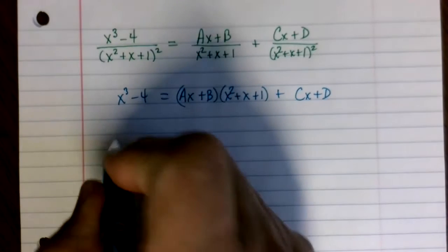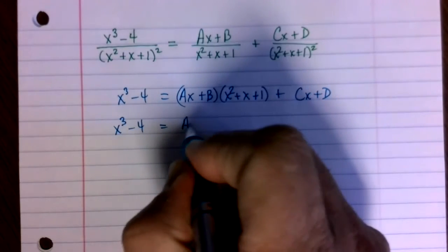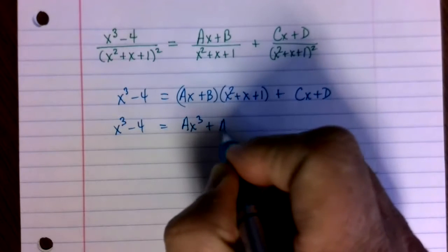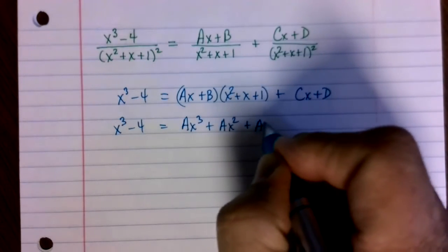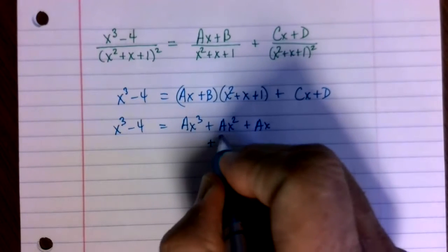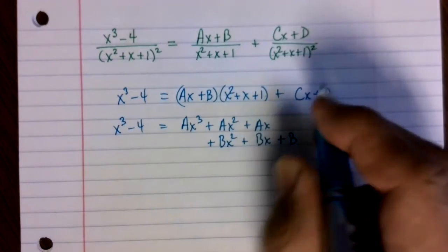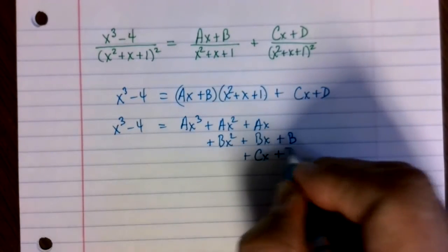So I have x cubed minus 4 equals ax cubed plus ax squared plus ax, multiplying all these by ax, multiplying by b, we get bx squared plus bx plus b, then over here, plus cx plus d.